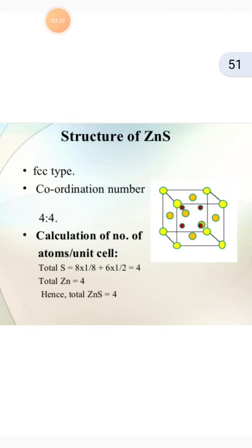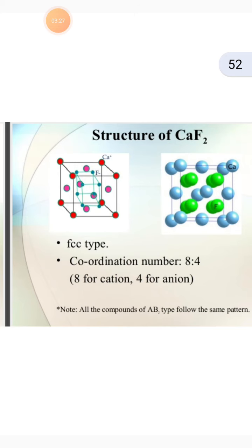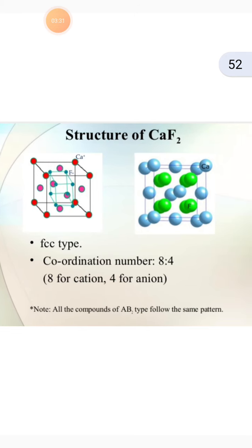The diagram for ZnS is shown here. Next, the structure of CaF₂ — the diagram is shown here. The green color represents fluorine and the sky blue color represents calcium. In this structure the coordination number is 8 to 4 — 8 for Ca and 4 for F. All AB₂ type compounds follow the same pattern.